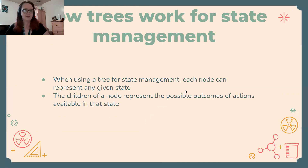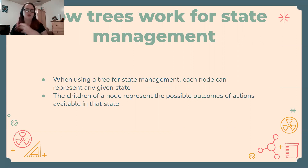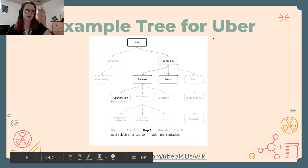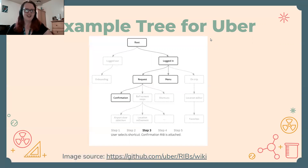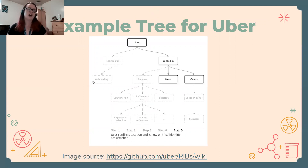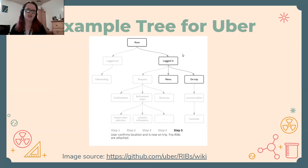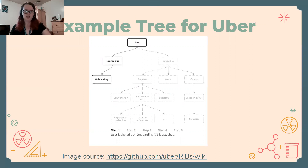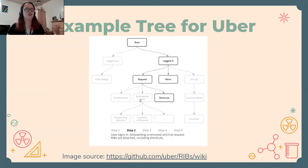So how do trees work for state management? When a tree is used for state management, each node depicts a specific state. When you want to navigate between states, you can go through any of the children nodes of the node you're currently on. Those children represent the possible outcomes of committing an action. Here's an example using the Uber app: you open Uber and either go into the logged-out state or the logged-in state. If you're logged out, you go into onboarding — either create a new password, create a new account, or enter your username and password. In the logged-in state, you get a different set of actions: you can request a trip, look through the menu, or go to the on-trip state, and from there you can go to further actions.